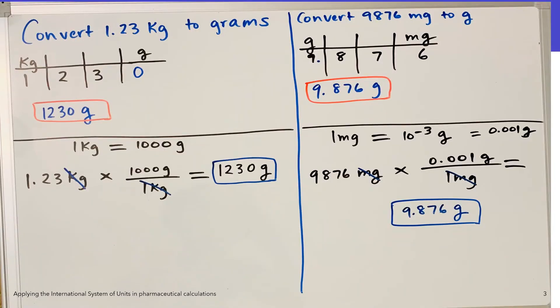Let's look at a problem. Convert 1.23 kilograms to grams. This can be solved two different ways. As we said before, from kilogram to gram, you move the decimal point three places to the right. So that means your final answer will be 1,230 grams.